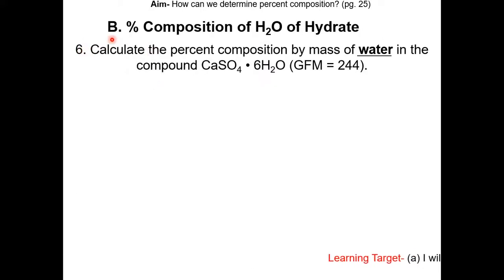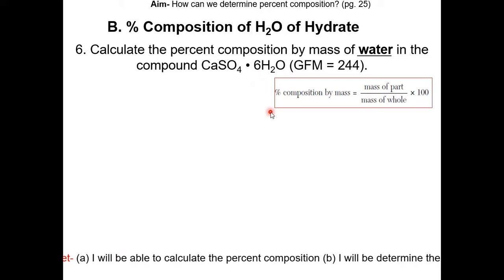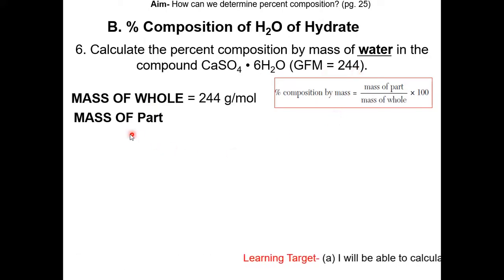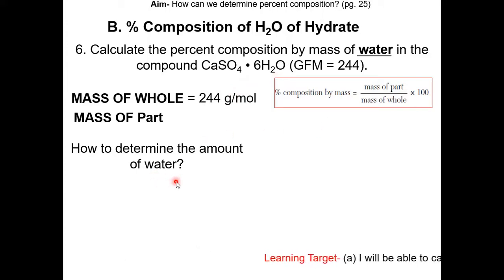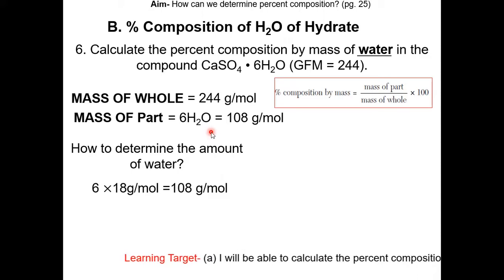In scenario B, we'll be calculating the percent composition of water in a hydrate. Question 6: calculate the percent composition by mass of water in the compound calcium sulfate hexahydrate. Look up the equation on Table T, then figure out the mass of whole and the mass of part. The mass of whole is the hydrate, which is 244 grams per mole. The mass of part is the mass of water in the hydrate. In the hydrate, we have 6 water molecules. Each water molecule has a molar mass of 18 grams per mole, so 6 times 18 is 108 grams per mole, and that is the mass of part.